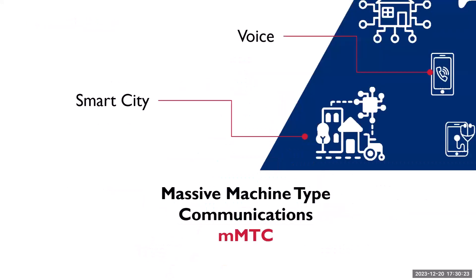Massive Machine Type Communications, or mMTC, is another important use case of 5G — its ability to support a large number of connected devices, hence the term 'massive.' 5G enables the creation of smart cities, smart homes, and smart factories using this use case. mMTC can also support mission-critical services such as remote monitoring of medical equipment in hospitals and real-time asset tracking.